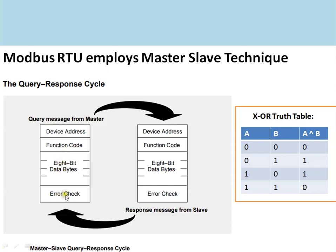Along with the data bytes, there are error checking bytes sent as well. The PLC will take these bytes and calculate the CRC for them, then check the received CRC with the locally calculated CRC. Only when both values match will the PLC give a response to the master query. This is the XOR truth table used in CRC calculation.